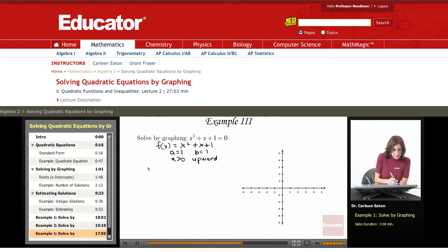I'm going to start by finding my vertex, which is negative b over 2a. So that is negative 1 over 2 times 1. That's negative 1 half.